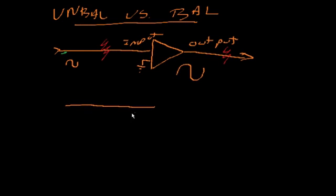So on a balanced interface, you have two inputs instead of one. So here's my amplifier. I'll draw my amplifier like this. And we have an output. So here's my output.